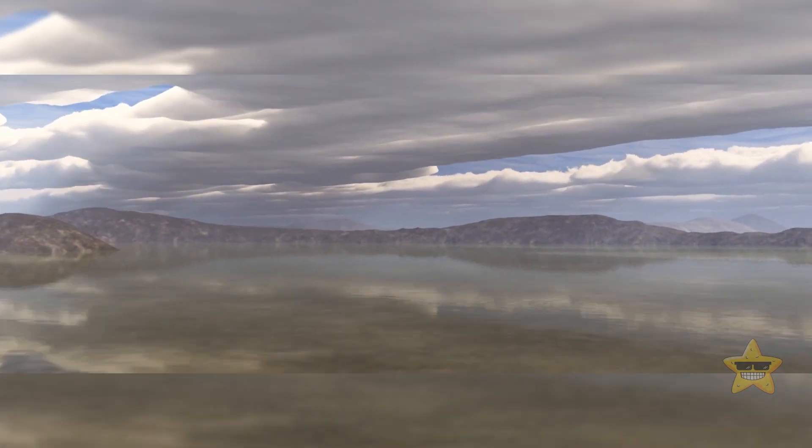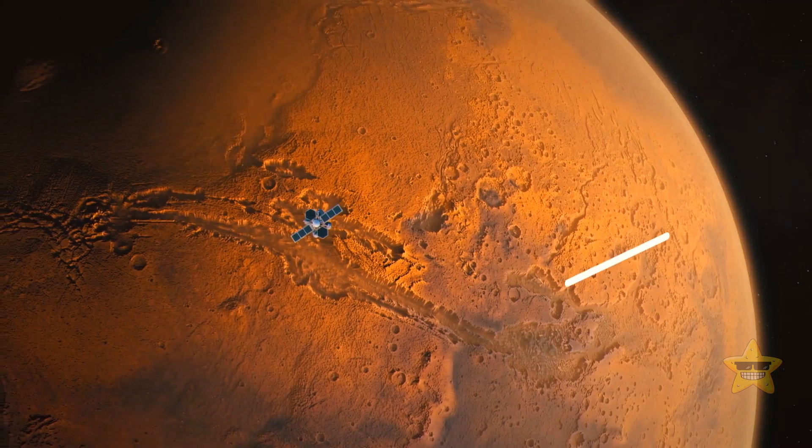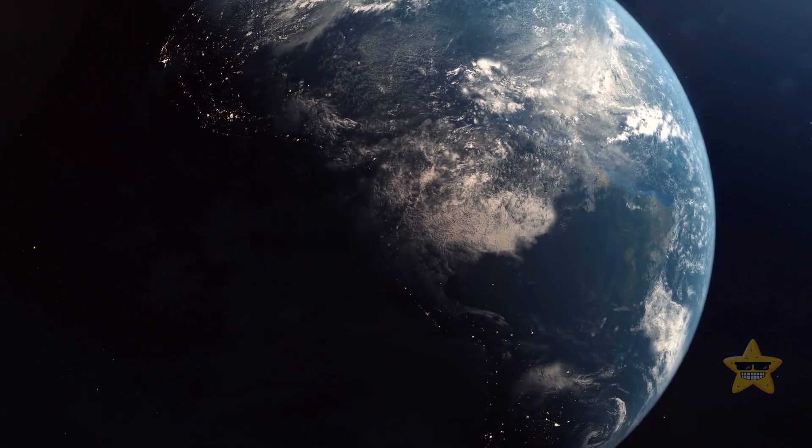Mars used to have magnificent lakes, rivers, and water streams that left traces we can see on its surface, even today. Luckily, Earth managed to keep its water, so life continued to evolve.